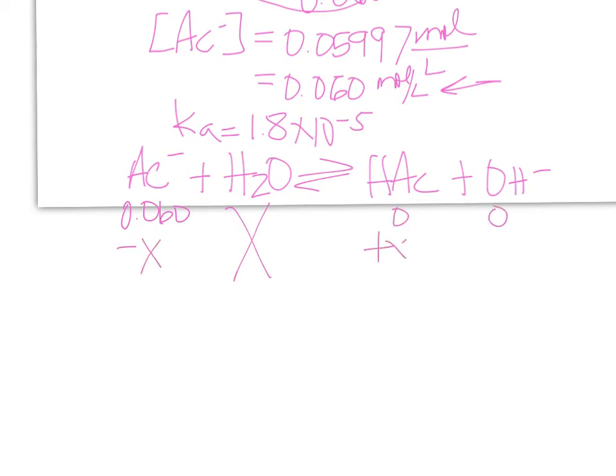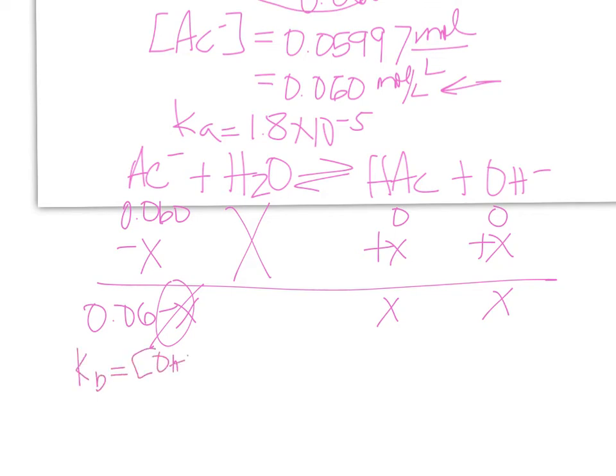We're going to shift to the right, minus X, plus X, plus X, 0.06 minus X, X and X. We're going to trump this, and so we get Kb. I'm writing my expression, oh look, we need a Kb.